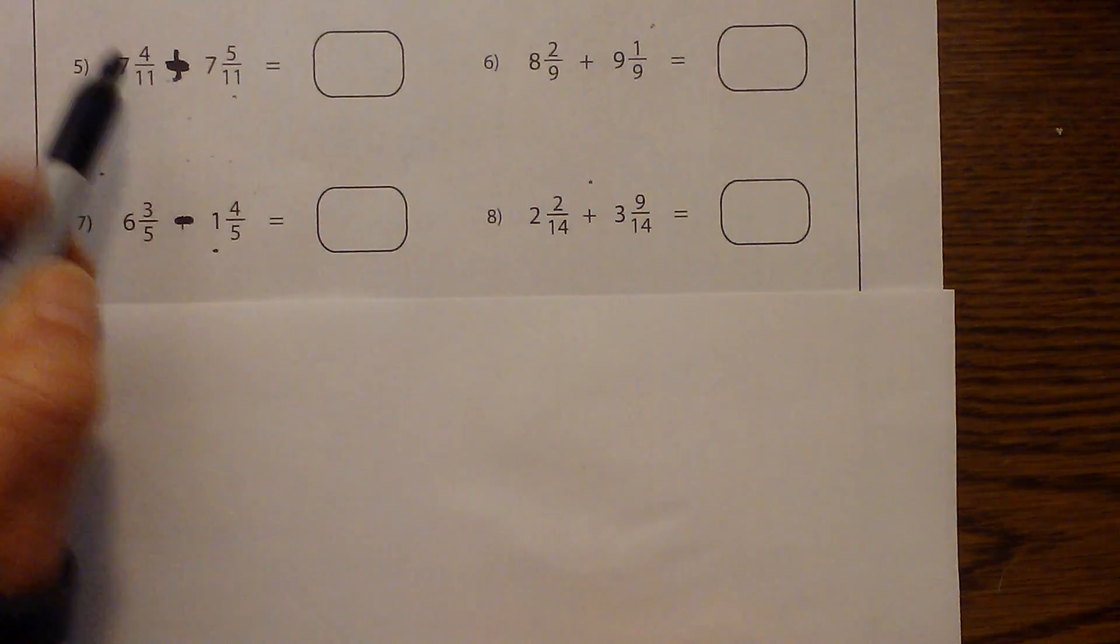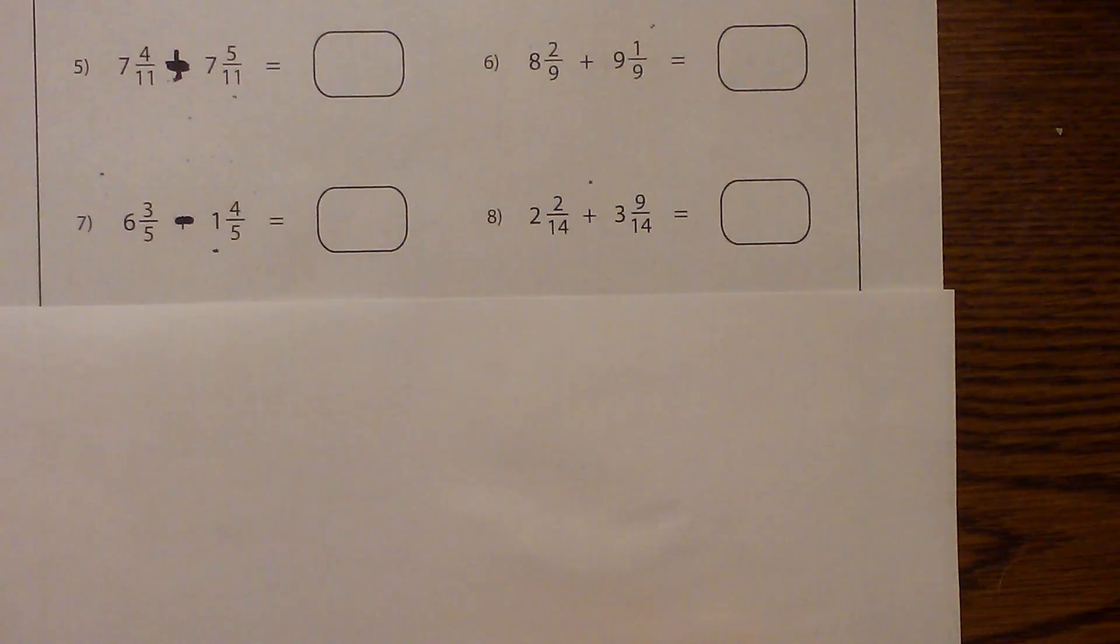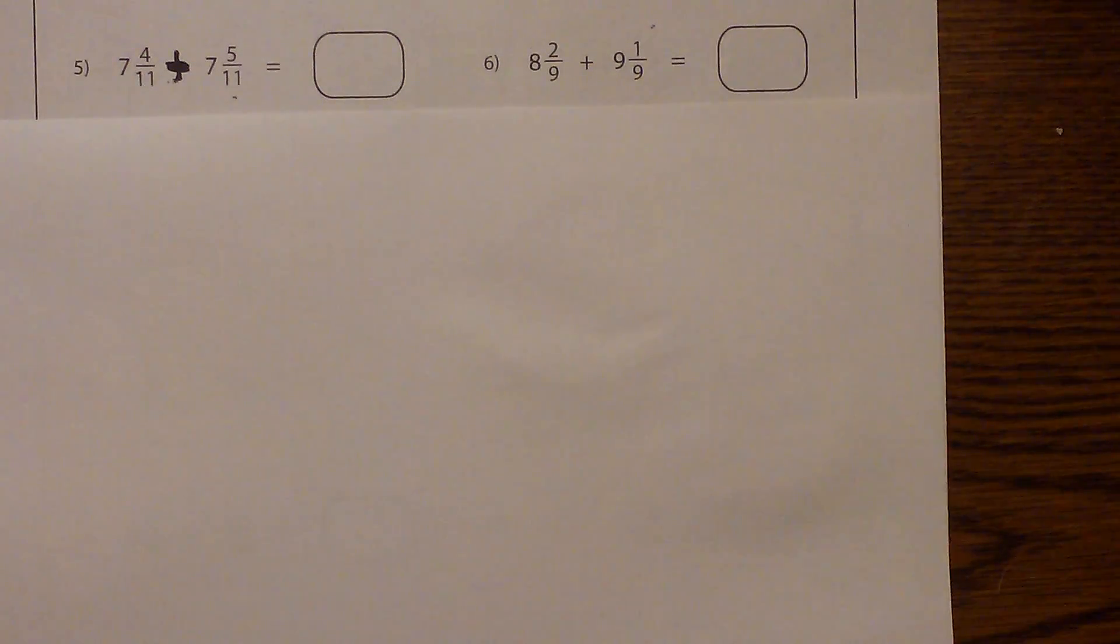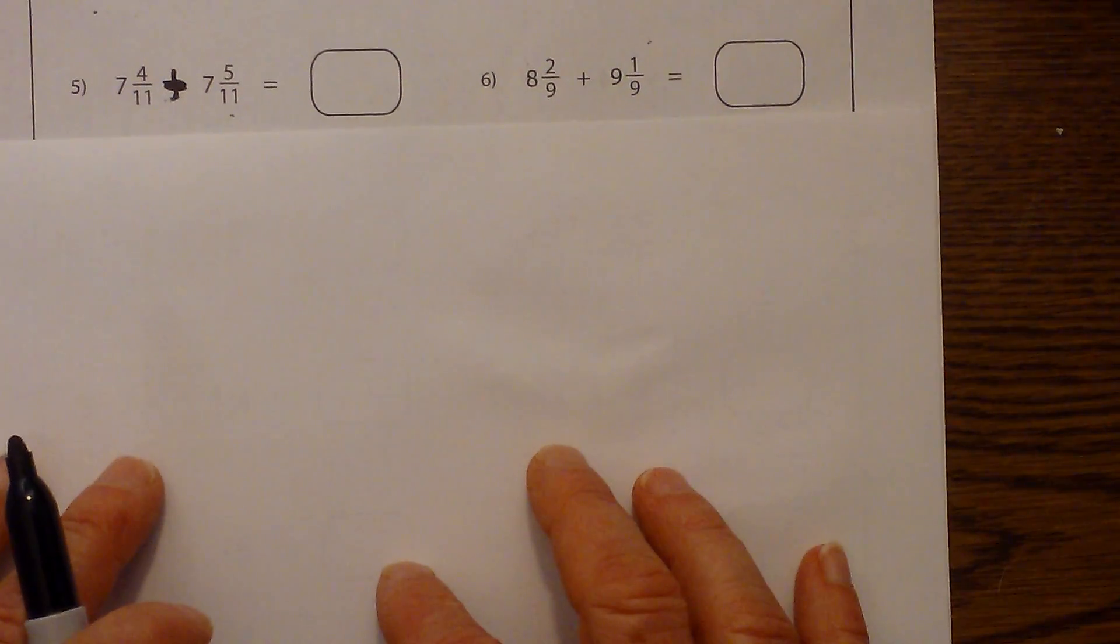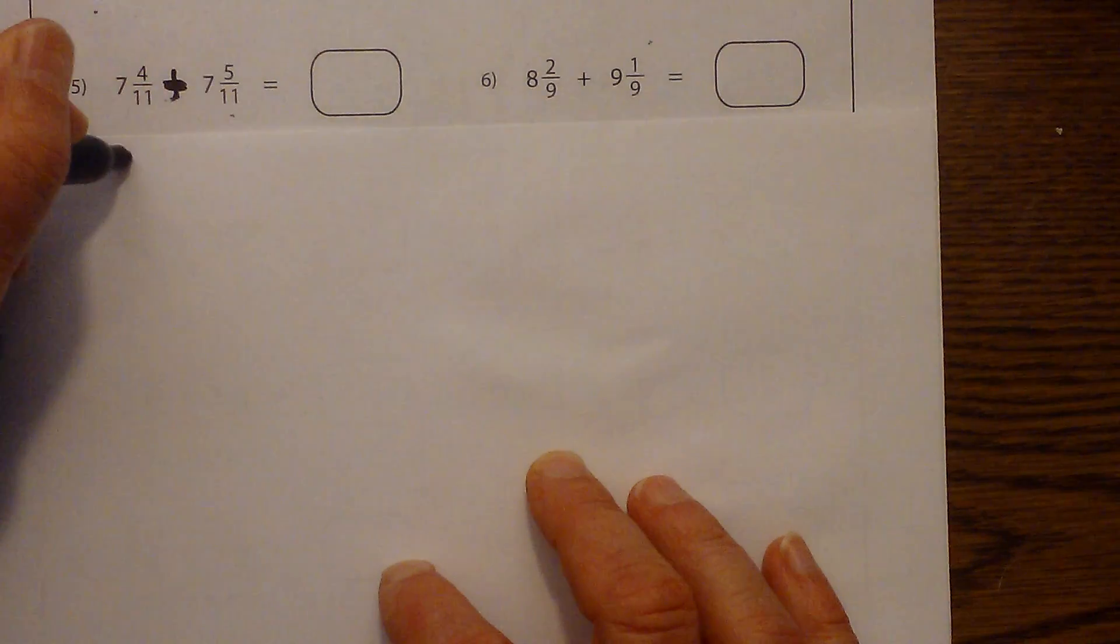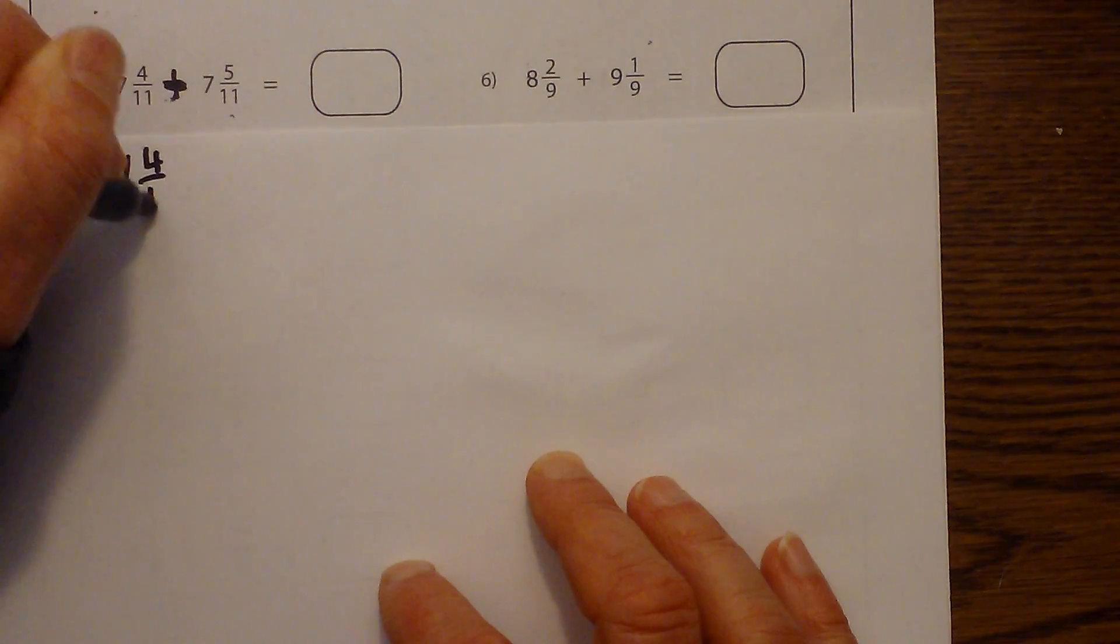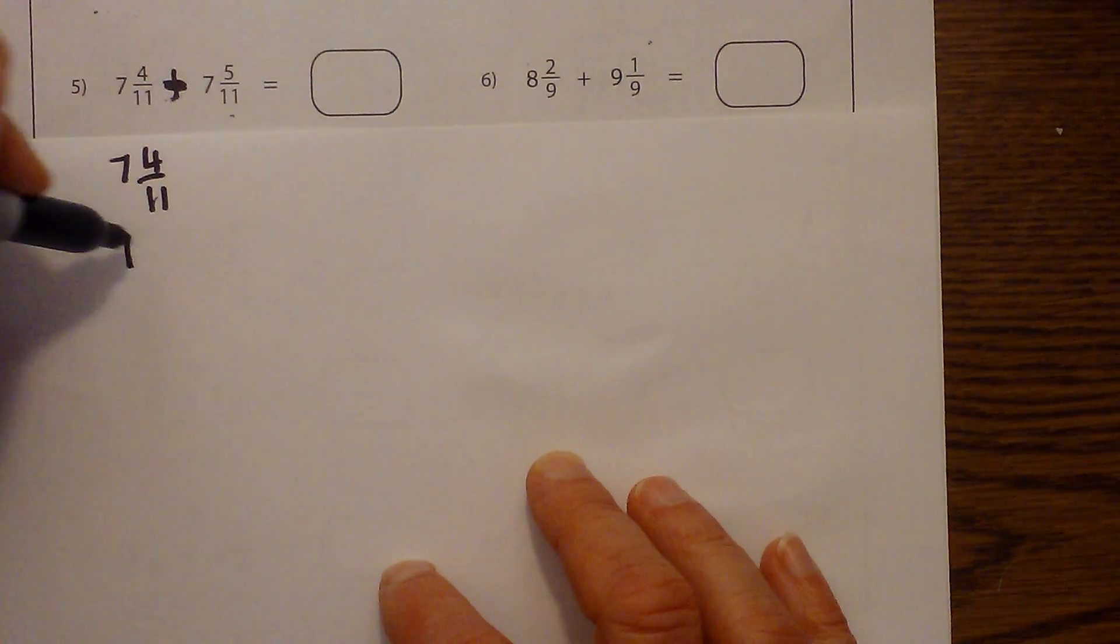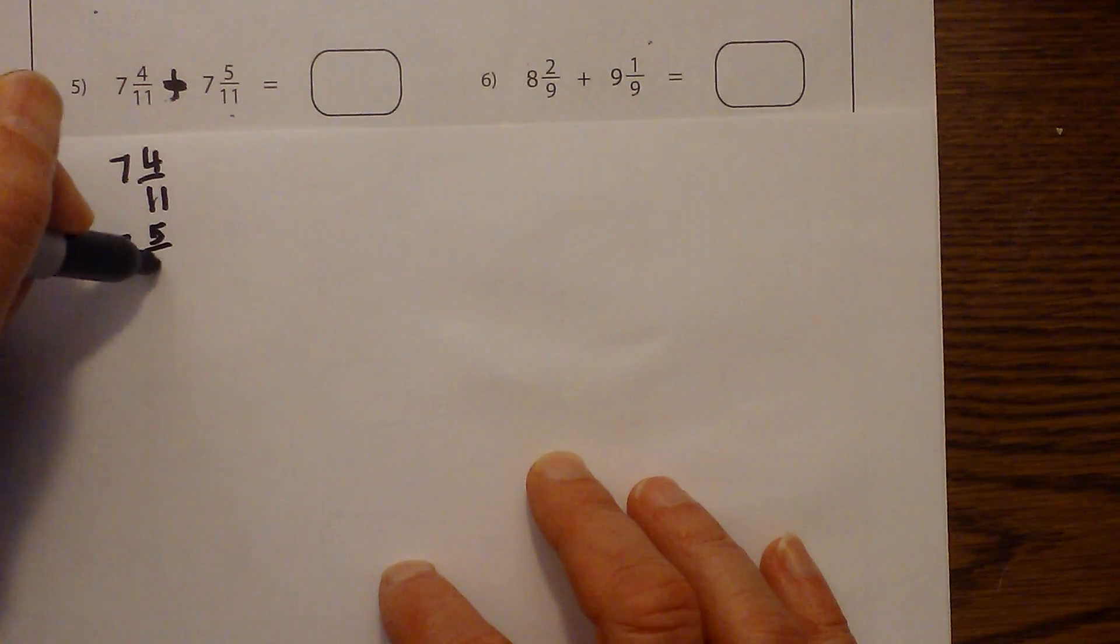So all we need to do is add. What I like to do, and I'm going to use this sheet of paper because that's too small of a space right there, is I like to place them in this format where they are vertical because I think it's a little bit easier to see.